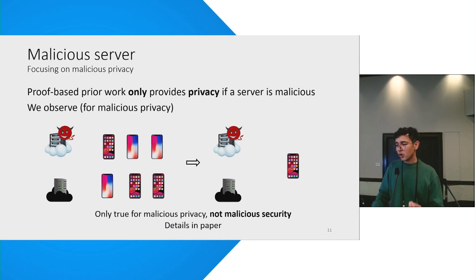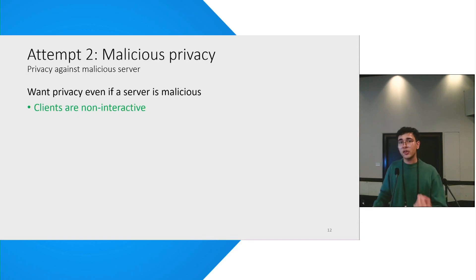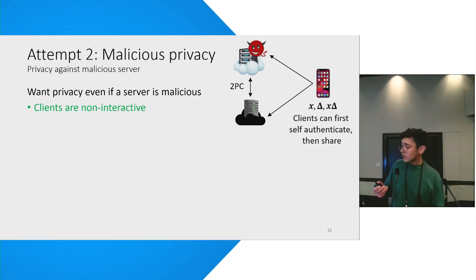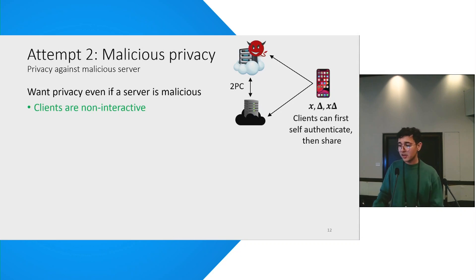Can we make our previous protocol any better with this insight? The answer is yes, a little bit, but not so much. What we can improve is we can now make our clients non-interactive. Each client will now sample its own MAC key, use that to self-authenticate its inputs, and then secret share it to the two servers — and they run the 2PC after that. So we have solved one of the problems.